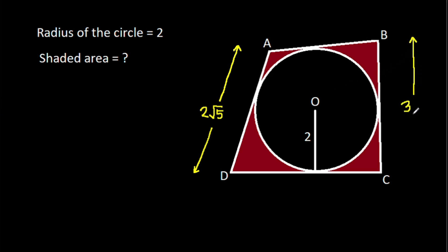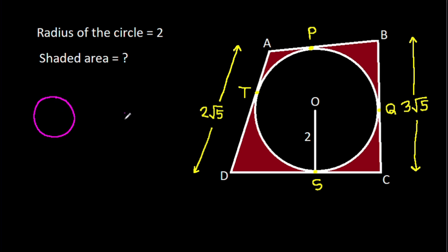Suppose this point is P, this point is Q, this point is S, and this point is T. Now, in any circle, from any external point P, if we draw two tangents to the circle — suppose this point is A and this point is B — then PA will be equal to PB.